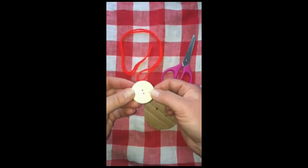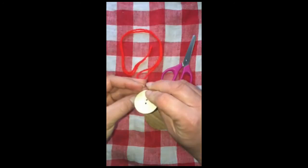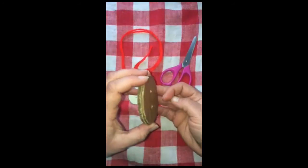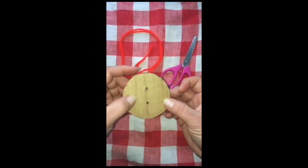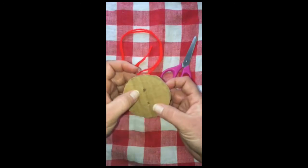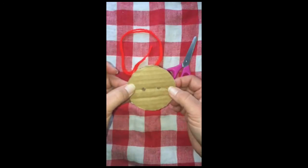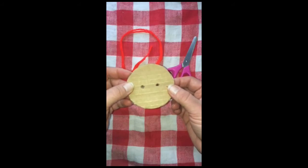Now, if you can find a big old coat button like this, that's great. If not, you can make your own button out of two or three layers of heavy cardboard glued together with a couple holes stuck right in there, and you can use that as a button from here on out.